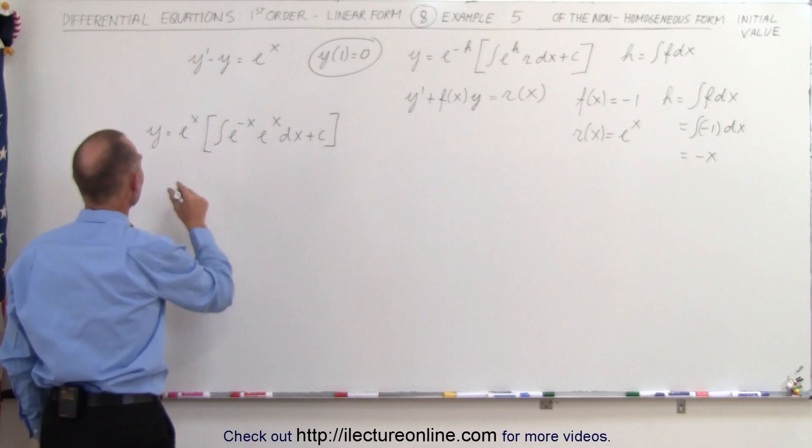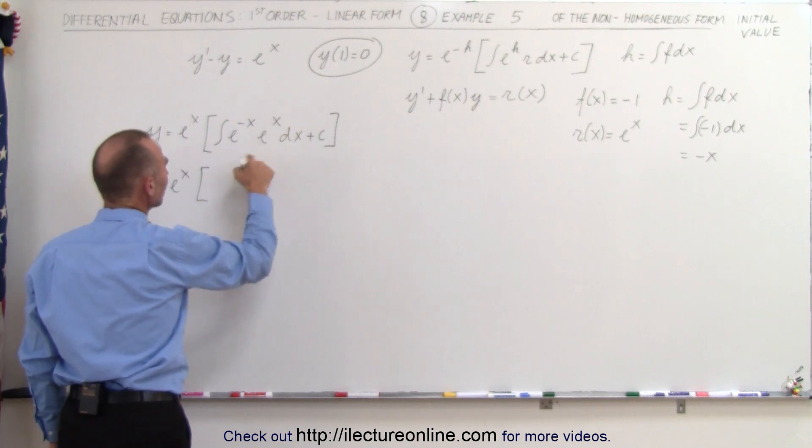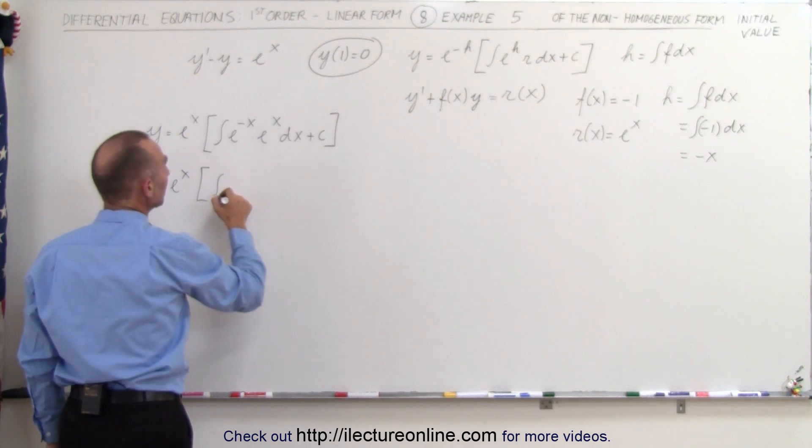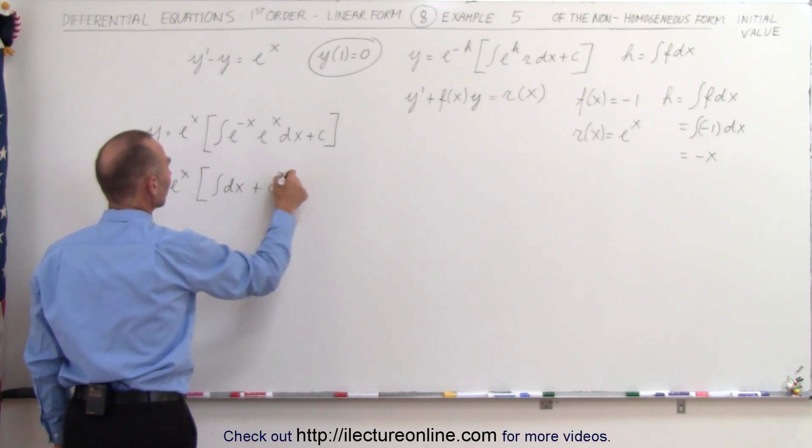Now simplifying this expression we get y is equal to e to the x times e to the minus x times e to the x, which is simply, that would be e to the 0 or 1, so we get integral of dx plus a constant of integration.